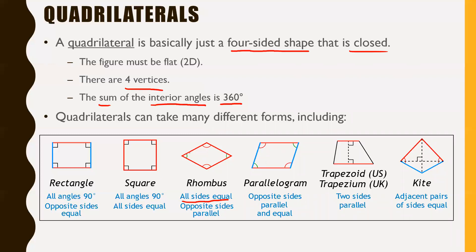Unlike a square, a rhombus's angles don't have to be 90 degrees, but the opposite angles will be the same. Notice they're color-coded: green and green, red and red — that was done on purpose.